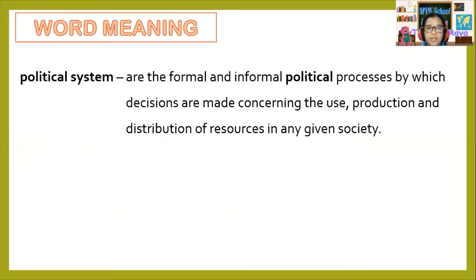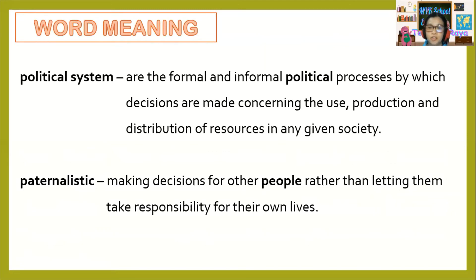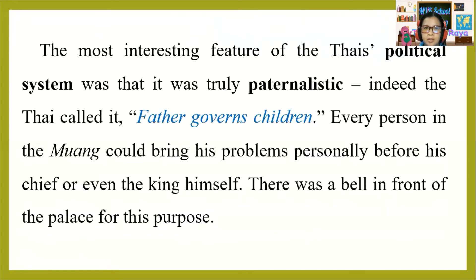Another word meaning — political system: the formal and informal political processes by which decisions are made concerning the use, production, and distribution of resources in any given society. Paternalistic: making decisions for other people rather than letting them take responsibility for their own lives. The most interesting feature of the Thai political system was that it was truly paternalistic. Indeed, the Thai called it 'father governs children.' Every person in a Muang could bring his problems personally before his chief or even the king himself. There was a bell in front of the palace for this purpose.